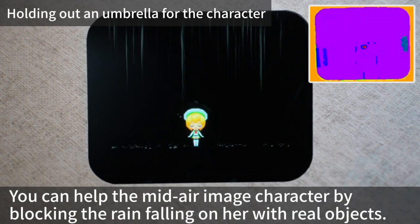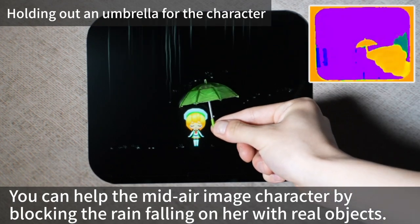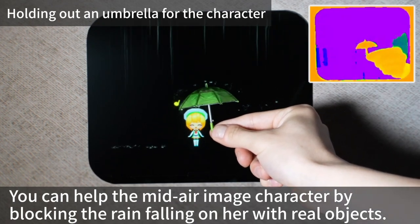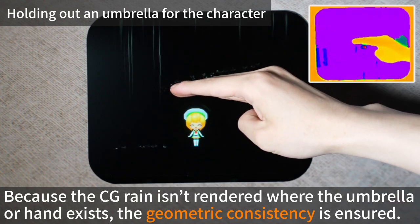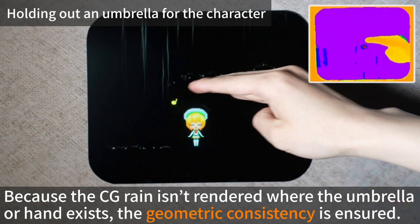You can help the midair image character by blocking the rain falling on her with real objects. Because the CG rain isn't rendered where the umbrella or hand exists, the geometric consistency is ensured.